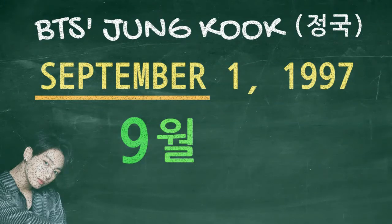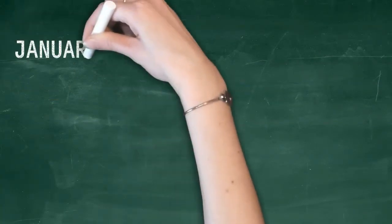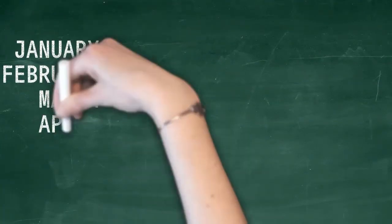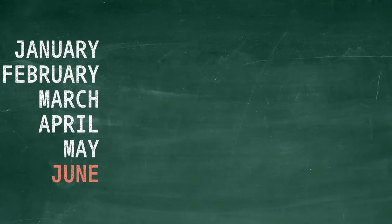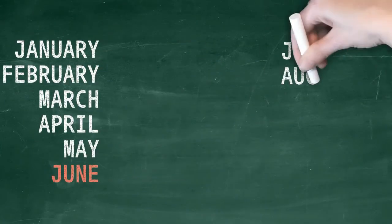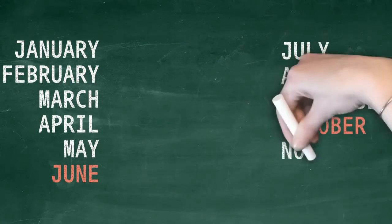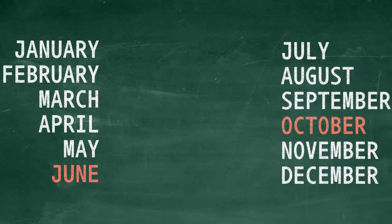But a word of caution here — you have two exceptions: June, the sixth month, and October, the tenth month. While other months follow the name based on the order they come in, these two do not.